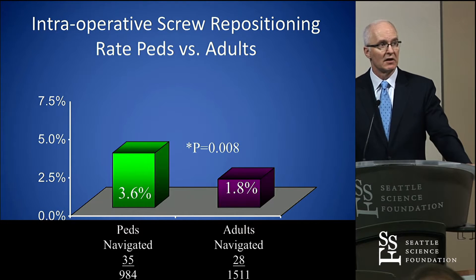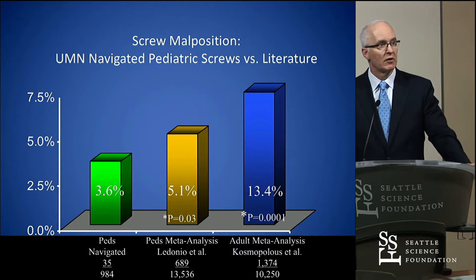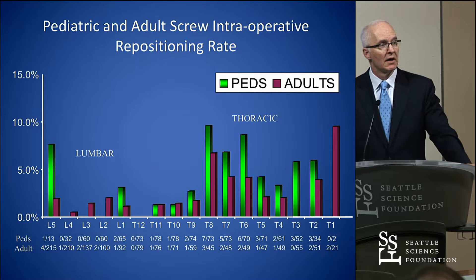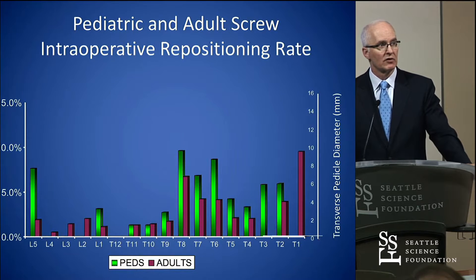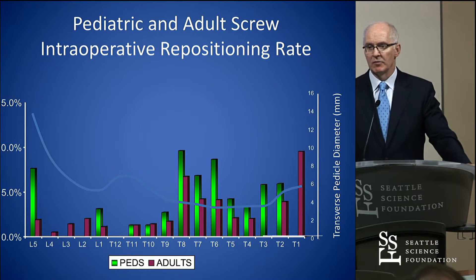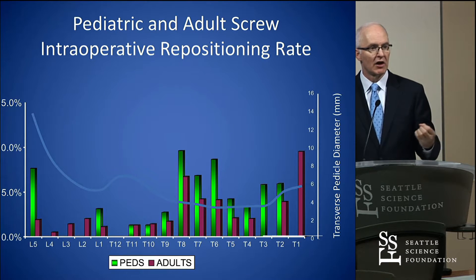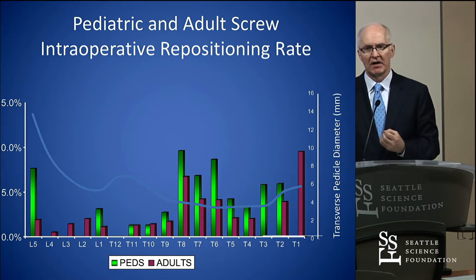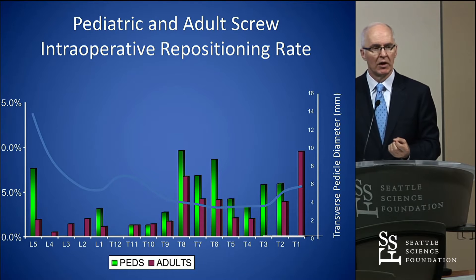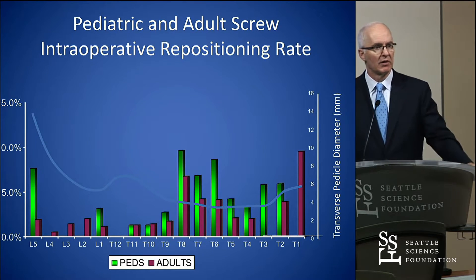Malposition was worse in kids than adults, which makes sense. Kids were actually better than the meta-analysis of the literature suggested they should be. When we measured pedicle size, we found that once a pedicle is smaller than about 4 millimeters, you have a much higher miss rate. When we talk about accuracy, it's probably not fair to express it as a simple number, because accuracy in a 10-millimeter pedicle is different than accuracy in a 3-millimeter pedicle.